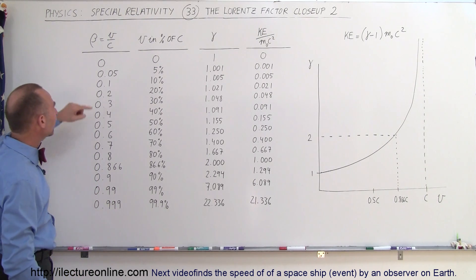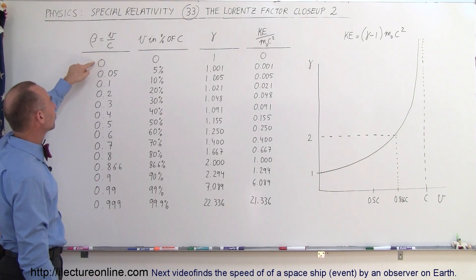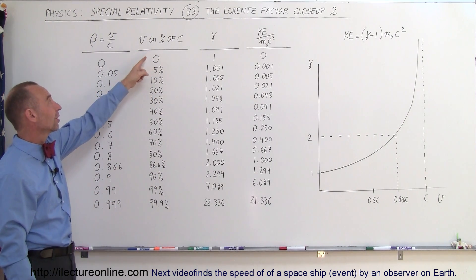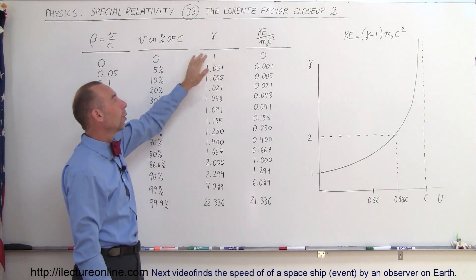Let's say we have an object with velocity relative to the speed of light equal to 0, which means it's not moving at all. In other words, the velocity as a percent of the speed of light is 0.